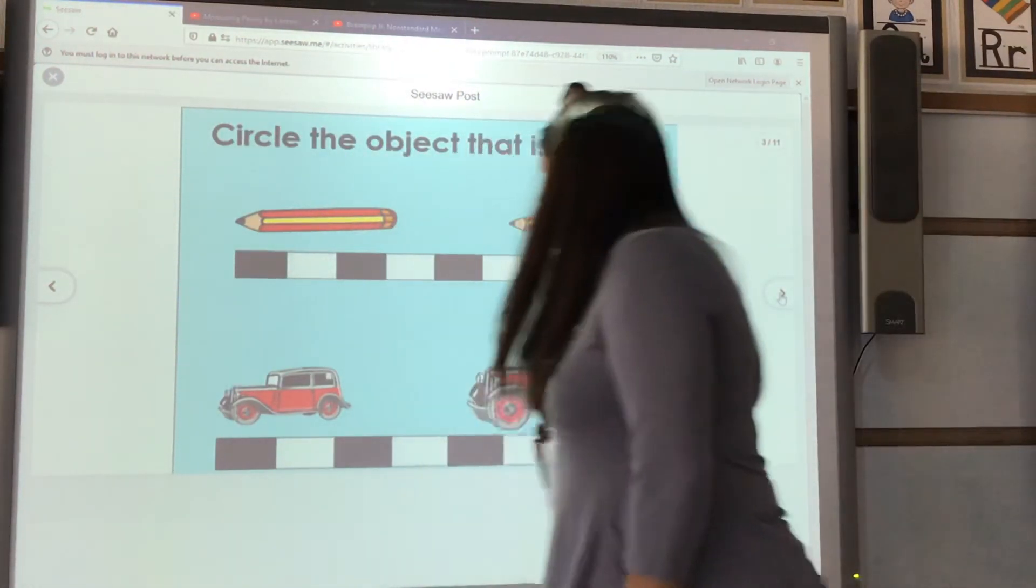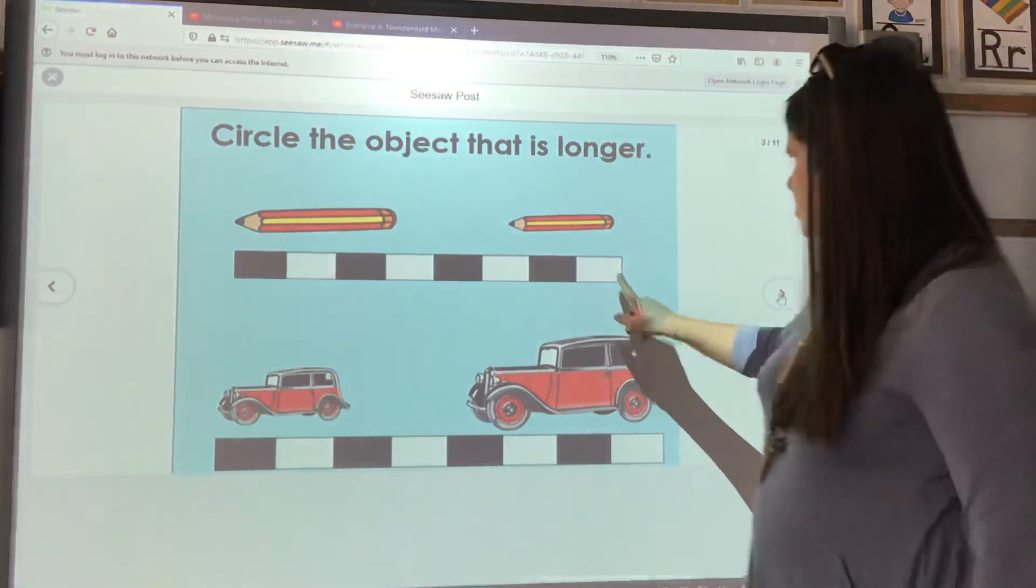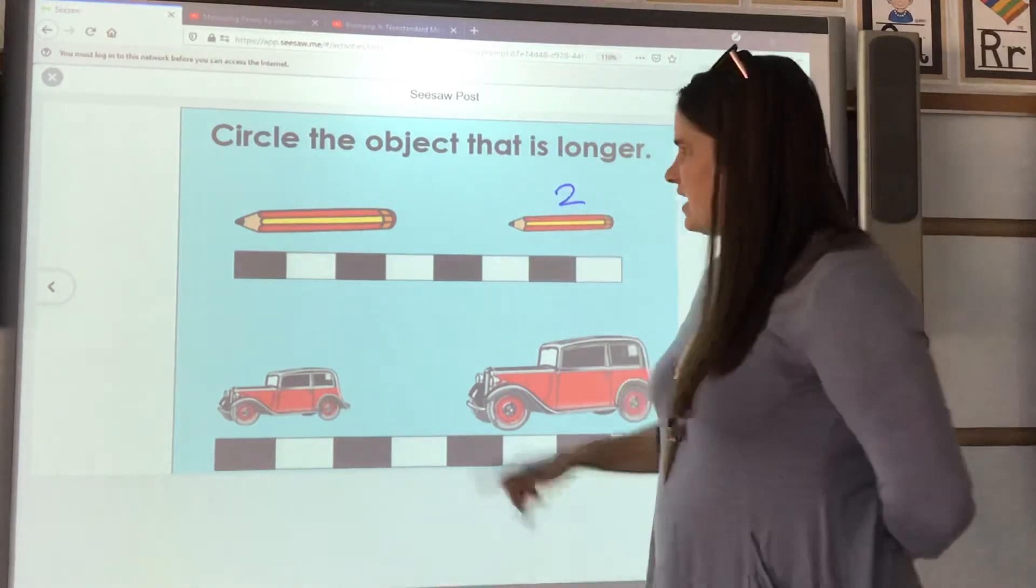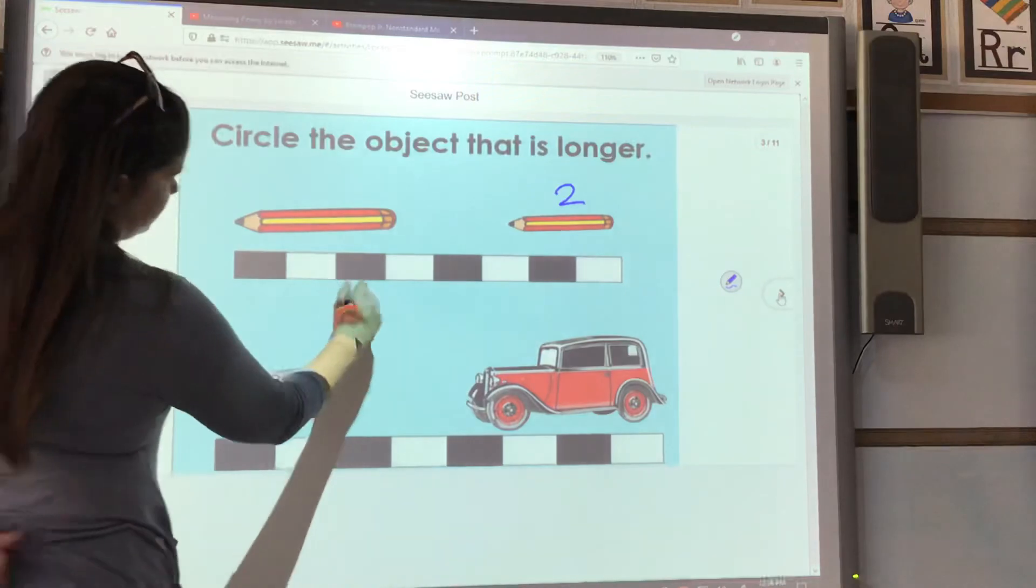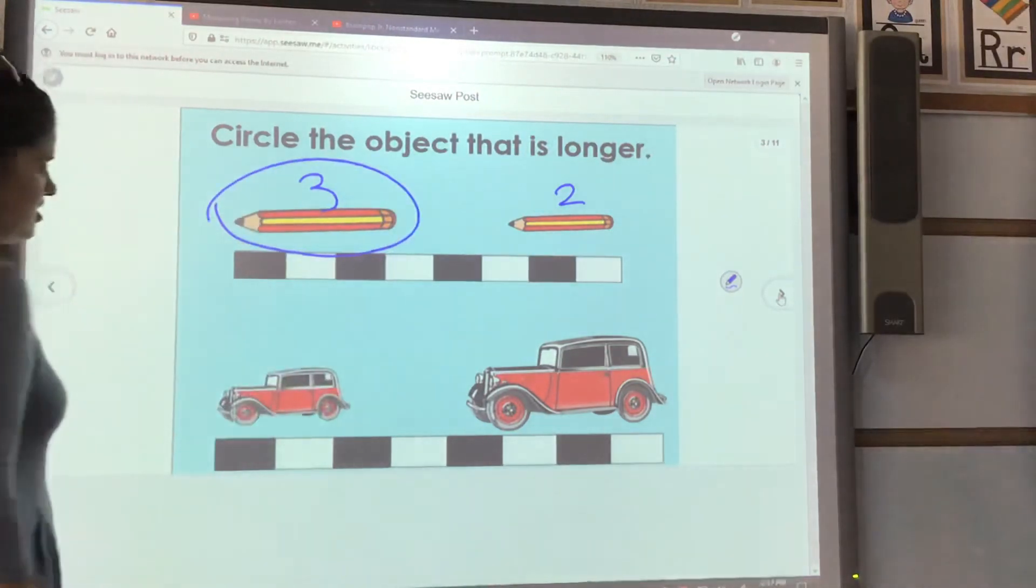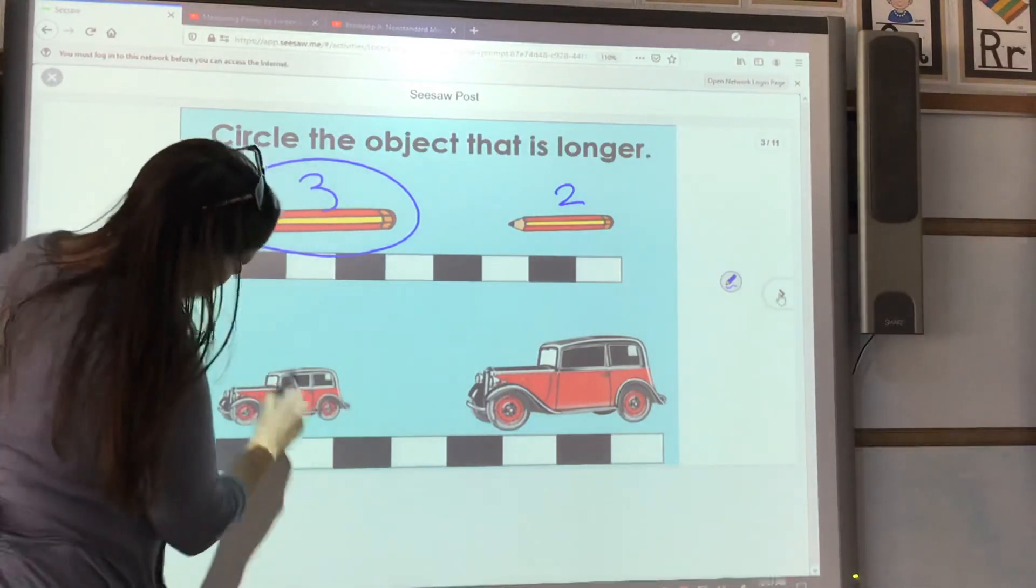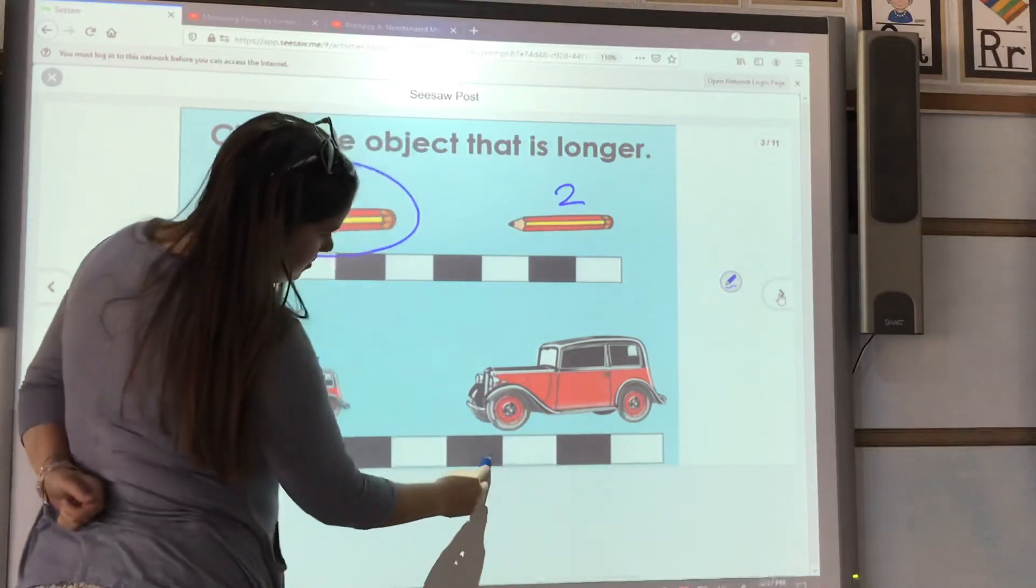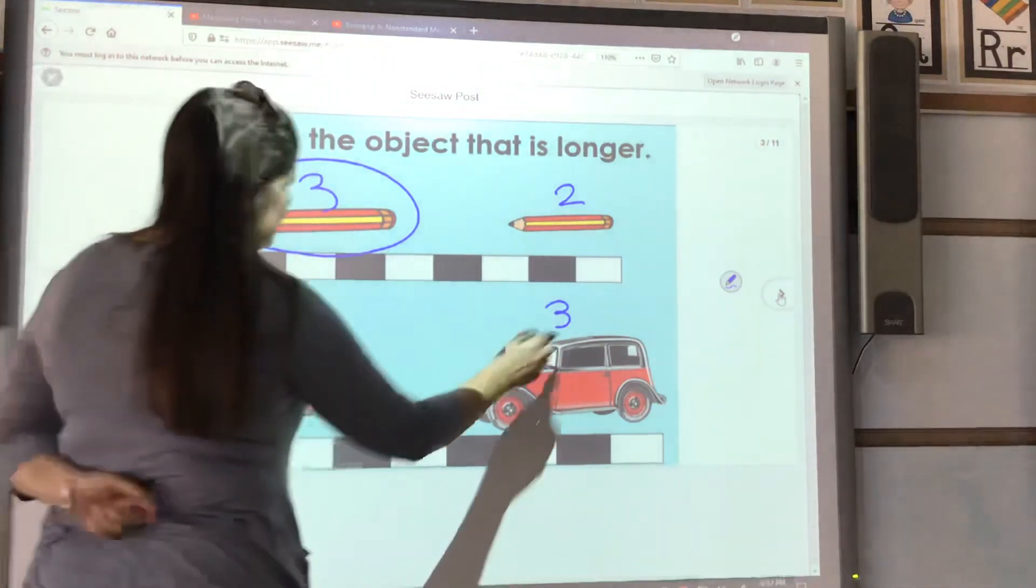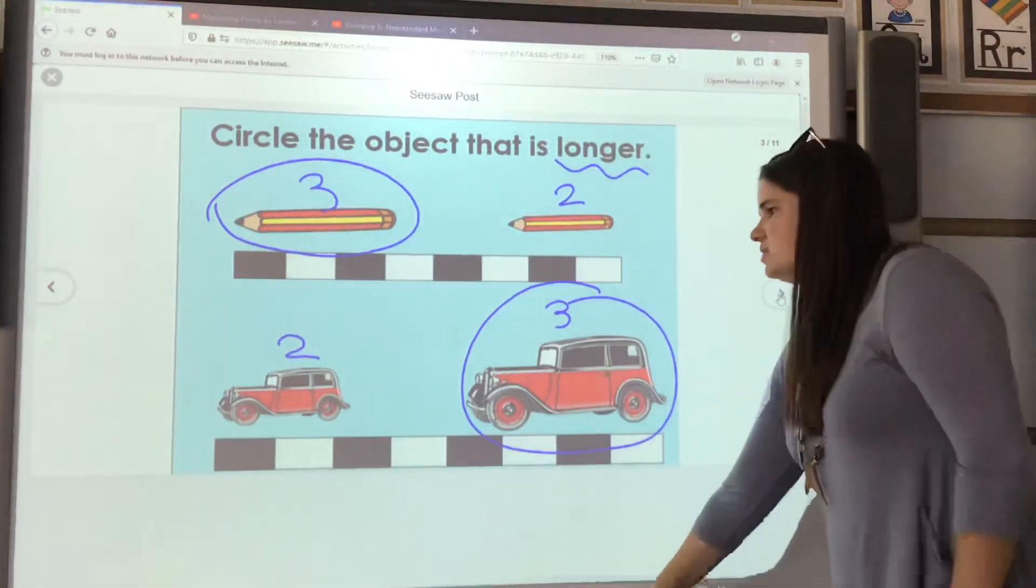So for these examples, you are also going to circle the object that is longer. This page says longer. So I'm going to look at these cubes. I see that this one is about one, two, a little bit more than two. So I'm going to put a two over this. And then I'm going to look at this one. This one is one, two, three, a little bit more than three. So I know just by looking at those that this one is longer. Circle the object that is longer. I look at this car and I see one, two, a little bit more than two. One, two, three. Whew. That one's about three and a half, but it's still three. So it's longer. Make sure you're circling and looking to see which one it's asking. If it wants longer or if it wants shorter.